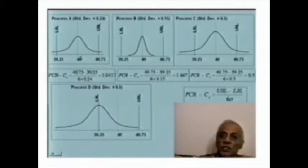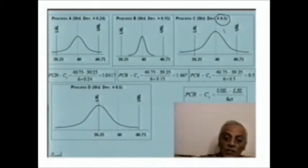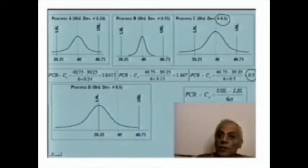If we go to process C, which has the highest standard deviation, and since we're dealing with the same spec limits, here the CP is 0.5. So that is, by comparison, the poorest process. 0.5 is the poorest or the worst case scenario, followed by process A at 1.04, followed by process B, which is the best at 1.667.